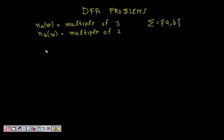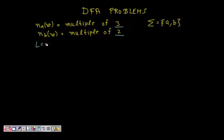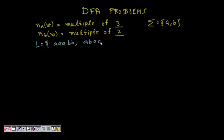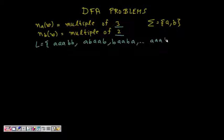In this lecture we are looking at an interesting problem where you are to design a DFA. The alphabet is a and b, and the number of a's should be a multiple of three and the number of b's should be a multiple of two. For example: a a a with b b, or a b a a b, or b a a b a — these are valid strings. You can also have six a's with four b's.